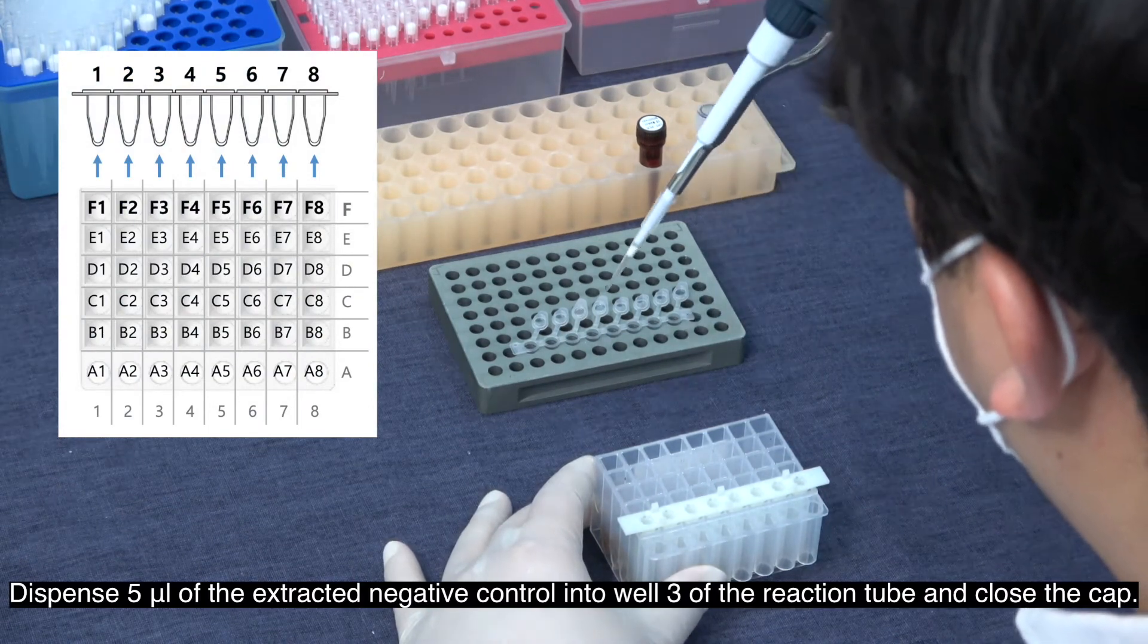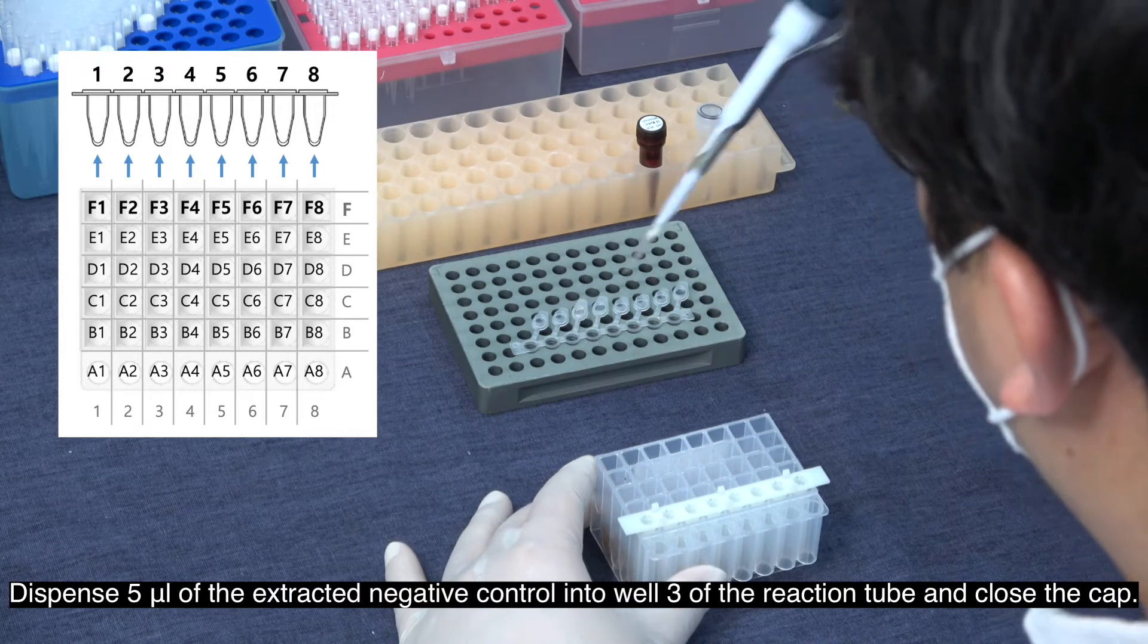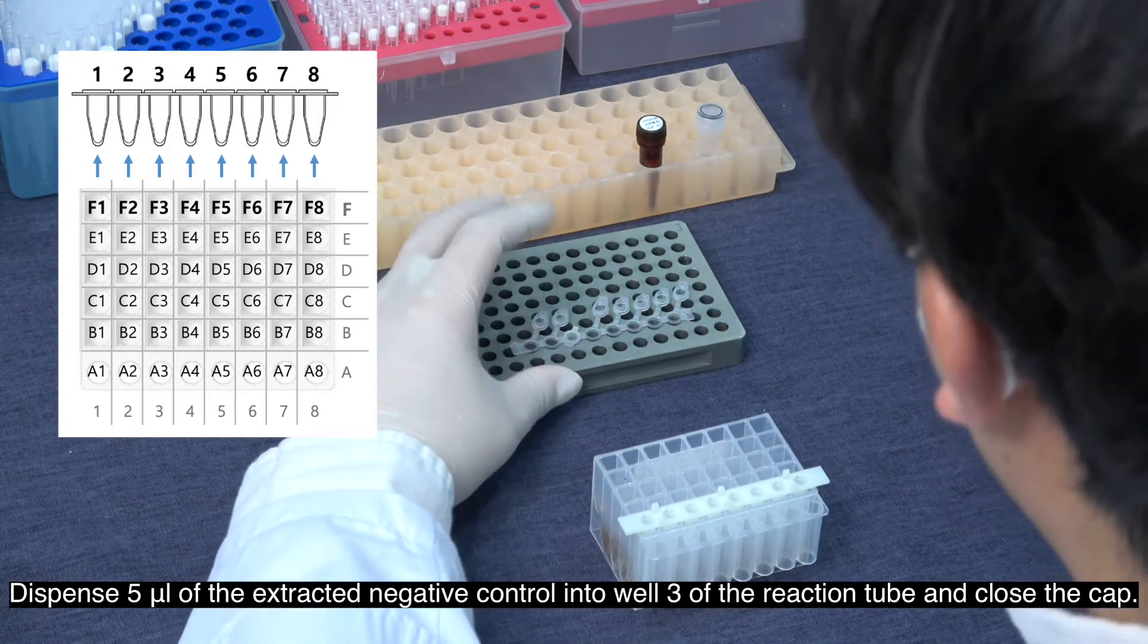Dispense 5 microliters of the extracted negative control into well 3 of the reaction tube and close the cap.